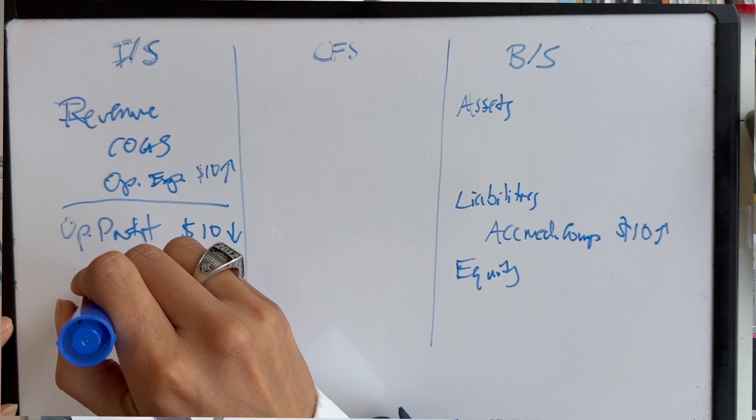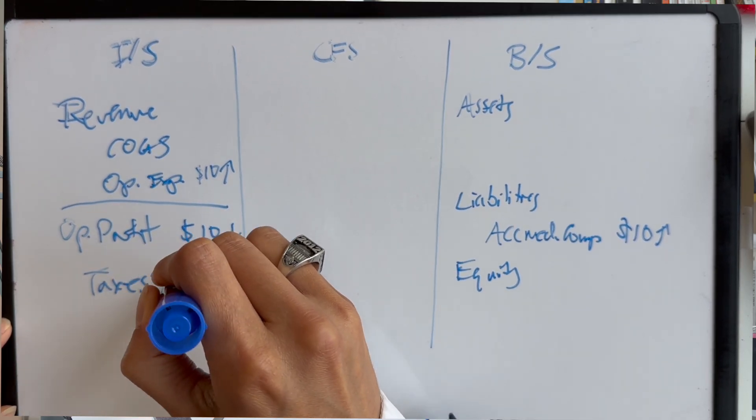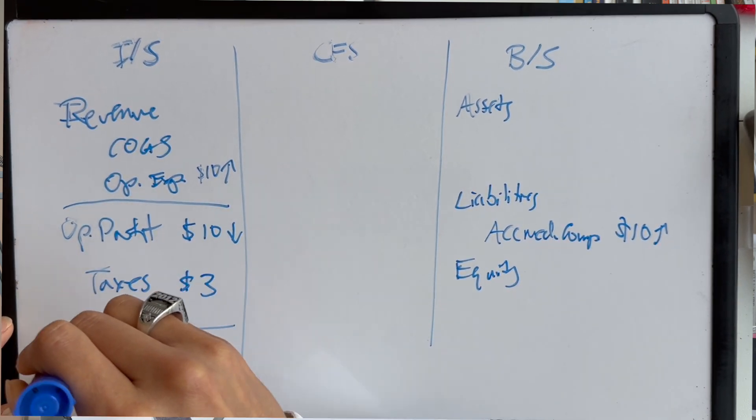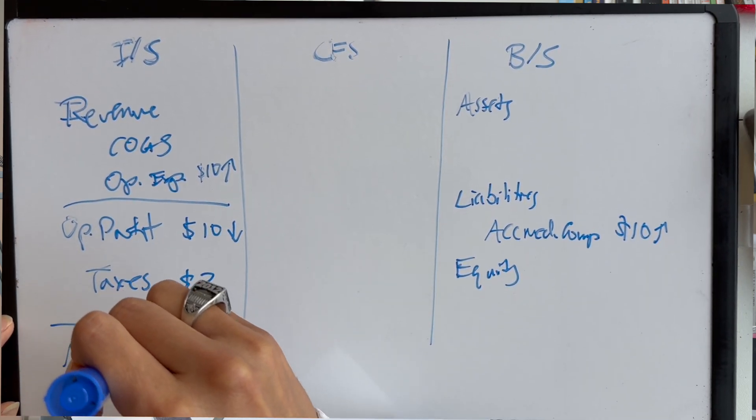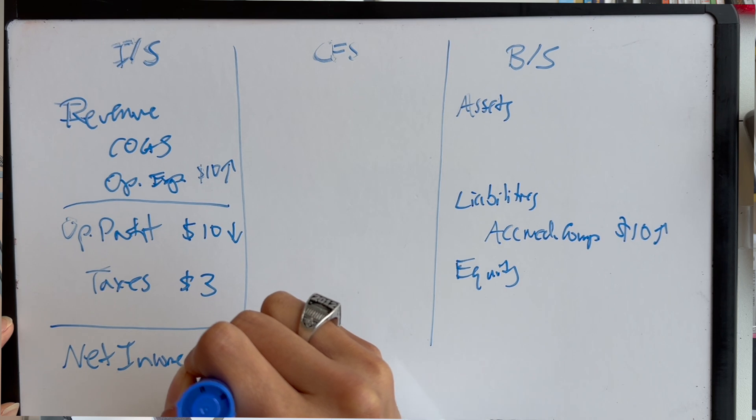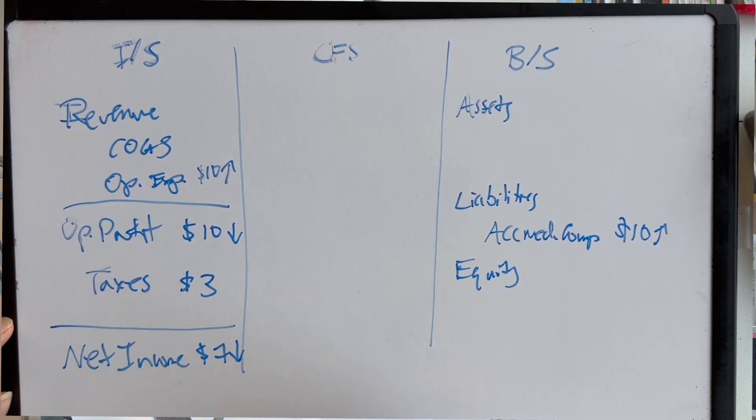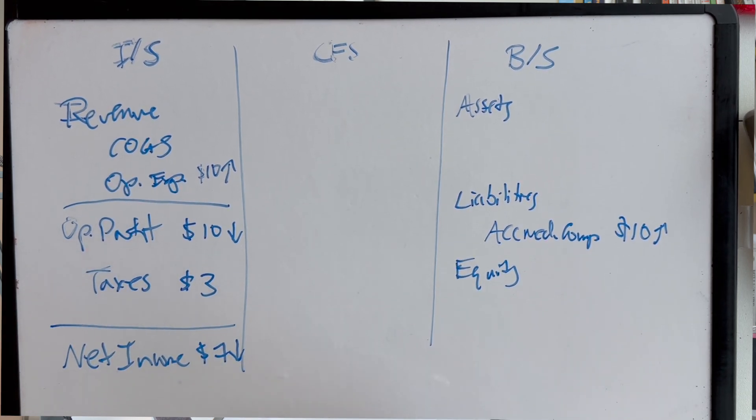Let's go ahead and assume a tax rate of 30%. So, taxes would be $3. And so, your net income here is going to go down by $7. So, net income is down by $7 as a result of this $10 increase in expenses.